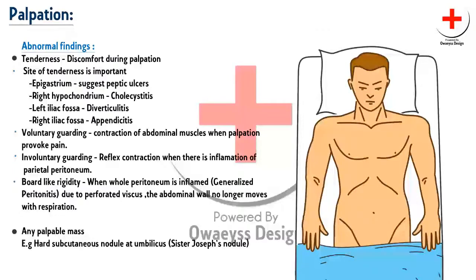If palpation provokes pain, it may result in voluntary guarding. But if there is inflammation of the parietal peritoneum, it causes involuntary guarding. Board-like rigidity is present in generalized peritonitis, and the abdominal wall no longer moves with respiration. Check for any palpable mass. A Sister Mary Joseph's nodule may be present at the umbilicus, which may suggest metastatic cancer of the abdomen.